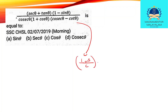1 minus sin theta by cos theta, into 1 minus sin. Then 1 plus sin into 1 minus sin theta, and 1 minus sin theta into cos theta. Now, cos theta by cos theta into cos theta.